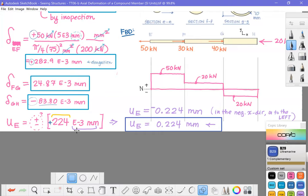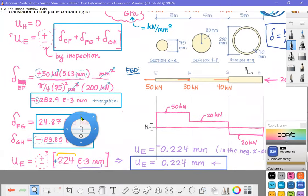We were asked to find the translation of plane E, and we determined that plane E translated 0.224 millimeters to the left. That's the end of this problem. I hope this was helpful for you.